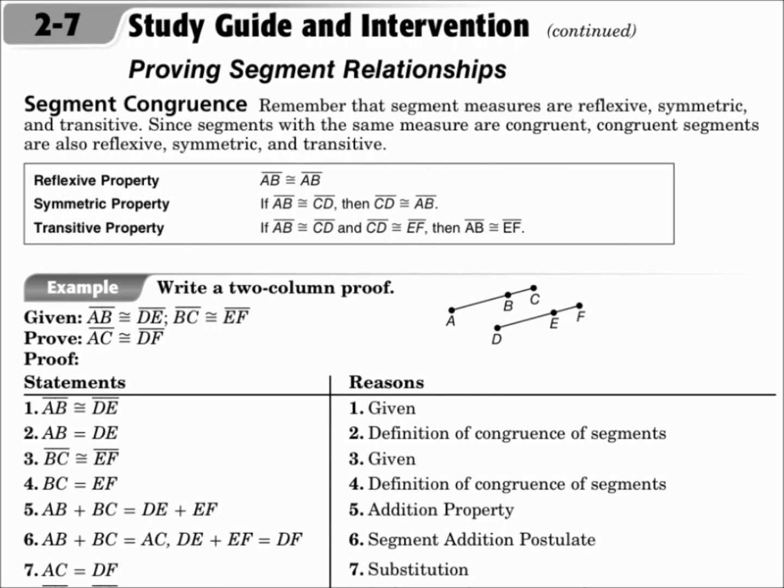Segment congruence. Remember that segment measures are reflexive, symmetric, and transitive, and this works the same with segment congruence. The reflexive property says that one segment is congruent to itself. The symmetric property, which normally flips things around the equal sign, now flips things around the congruence symbol. If segment AB is congruent to segment CD, then segment CD is congruent to segment AB. The first is congruent to the second, and the second is congruent to the first.